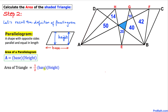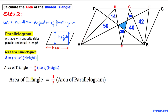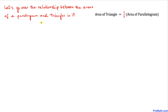The area of a triangle is always equal to one-half times base times height. Therefore, the area of a triangle is always half the area of a parallelogram when they share the same base and height. Let's go over this relationship between the areas of a parallelogram and a triangle.